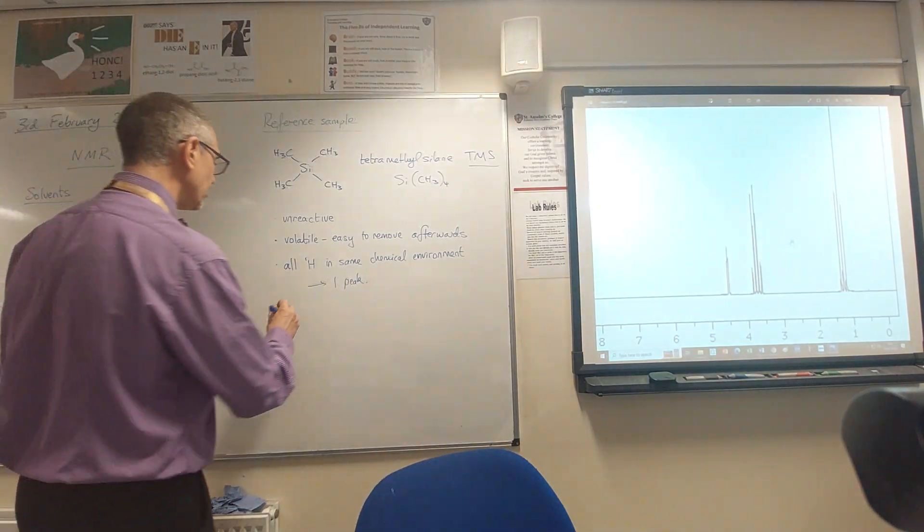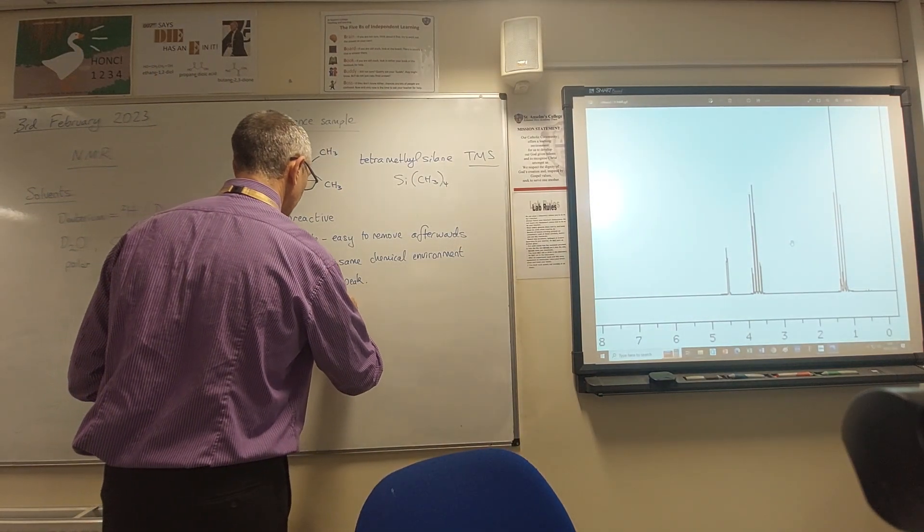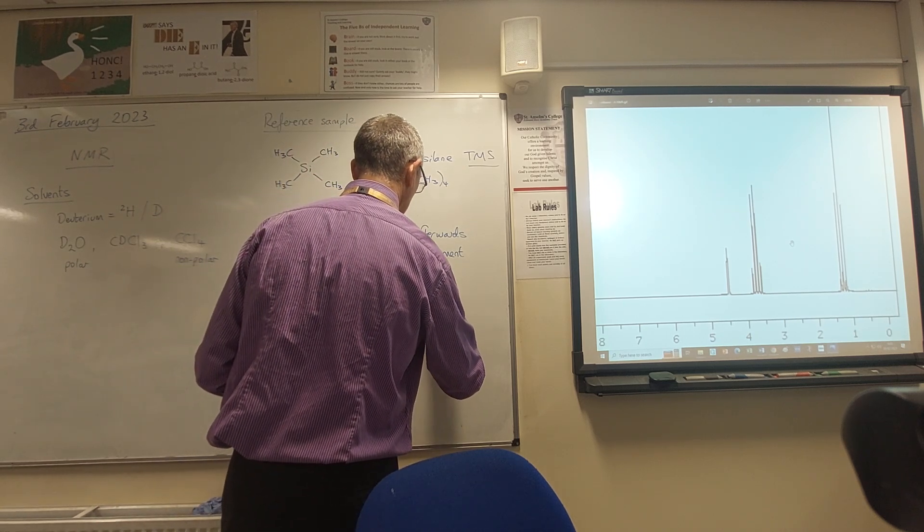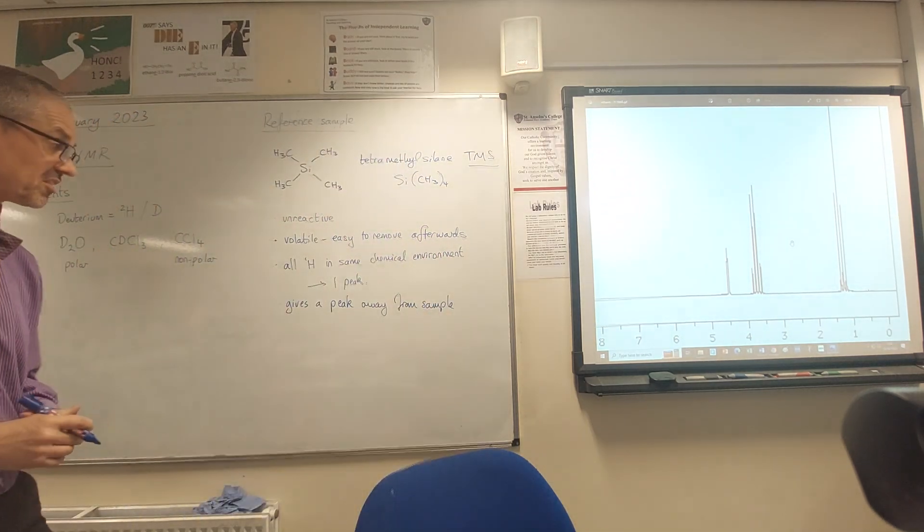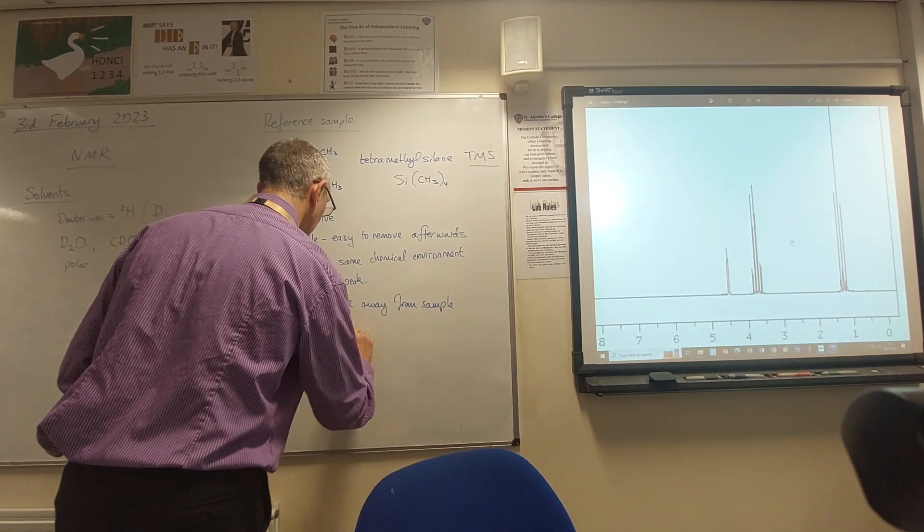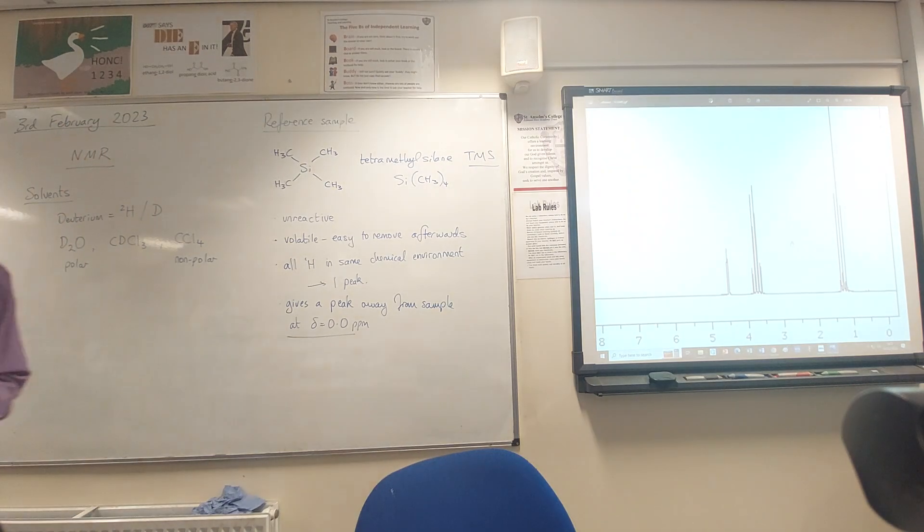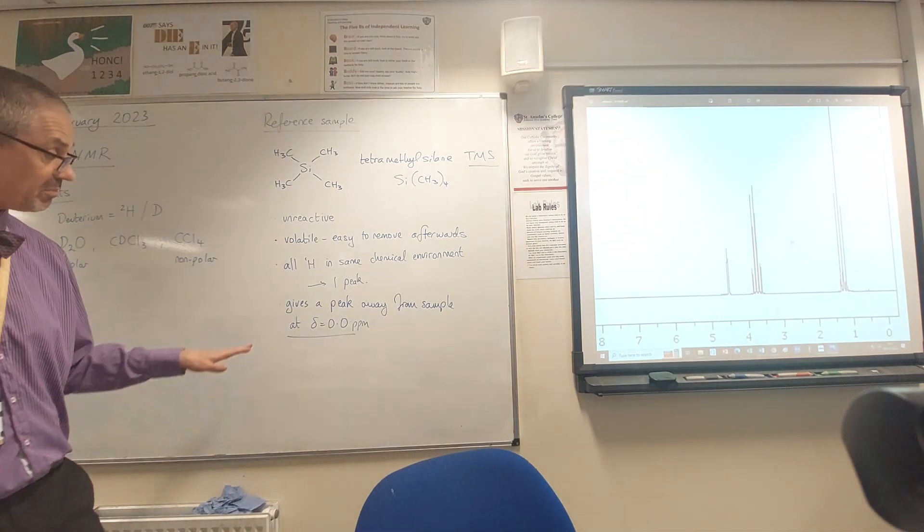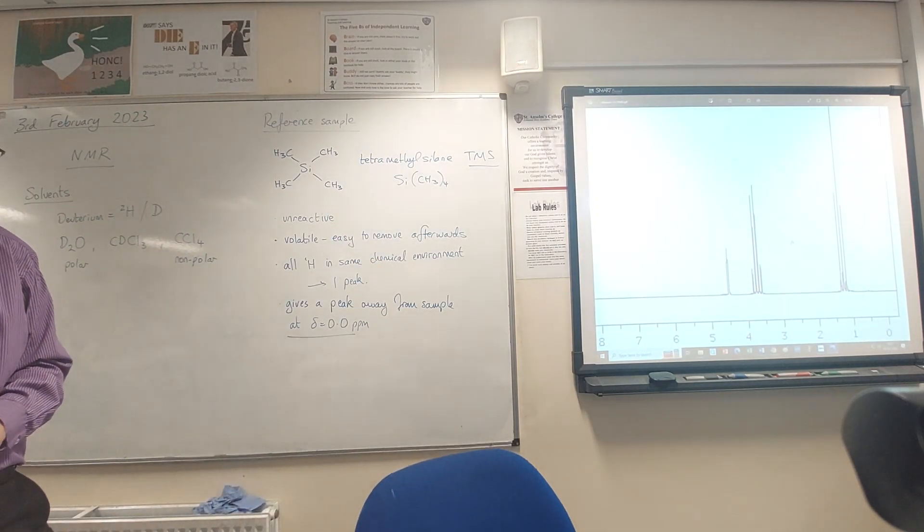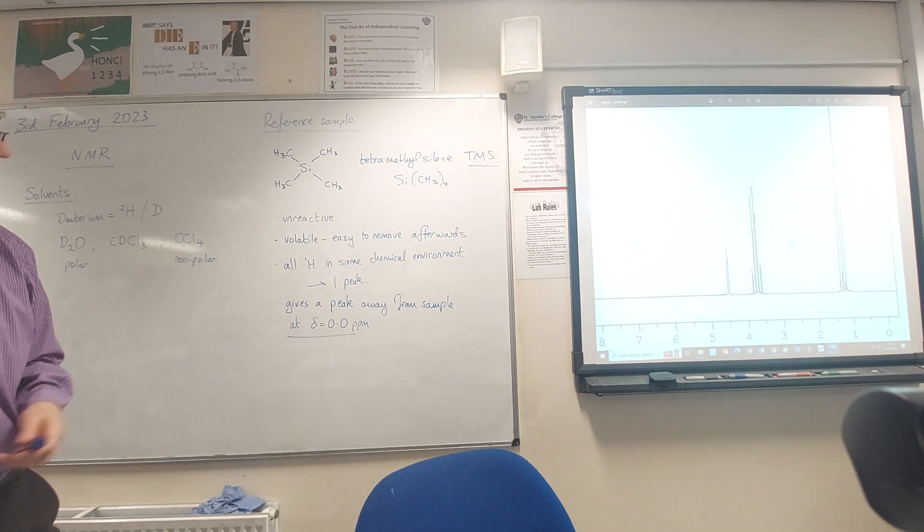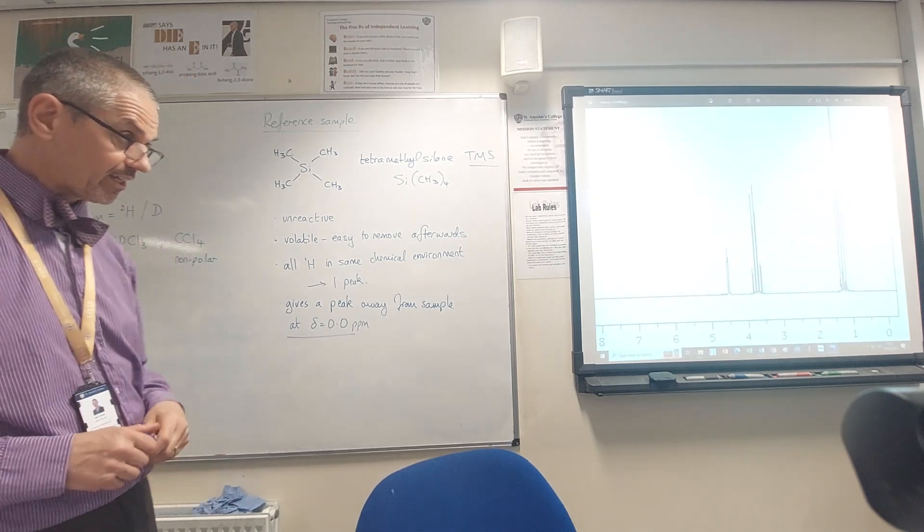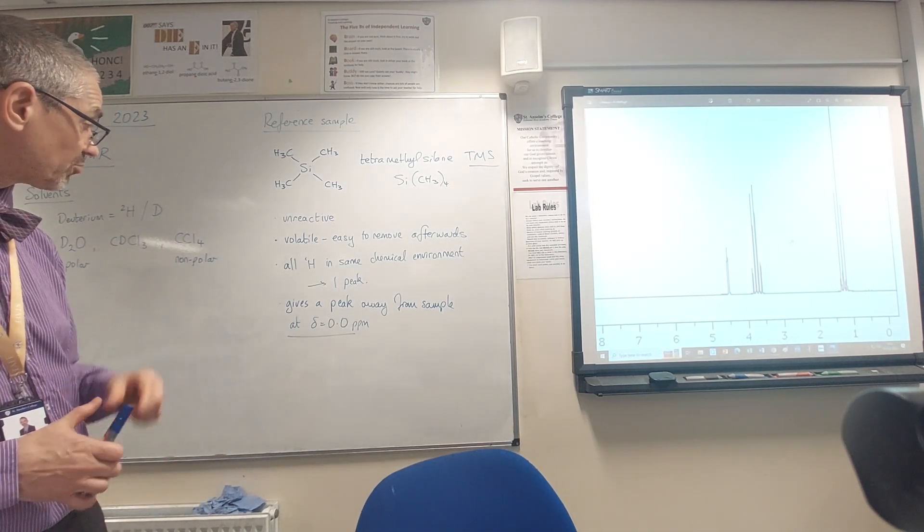In fact by definition, as well as giving a peak away from the sample it gives us our reference. So appearing on the spectrum at zero allows you to calibrate your spectrum and work out where everything else is. So that's why it's called a reference sample. It's there to refer to so we can get the numbers right for all the other peaks.